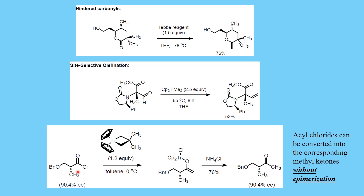When acid chloride is treated with Takai reagent — or a modified Takai-type titanium-based compound — it always ends up giving ketones. This is a very good method for preparation of ketones from acid chlorides using Takai reagent. Importantly, when there is a chiral methyl group alpha to the carbonyl, using such a reagent shows no epimerization at that position, demonstrating how mild and selective these reagents are.